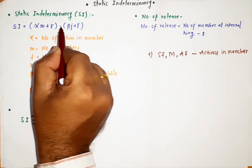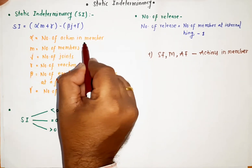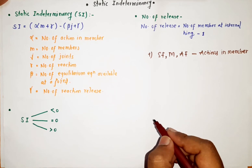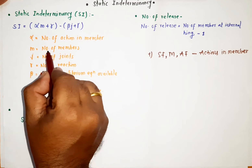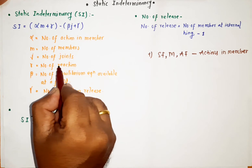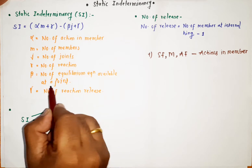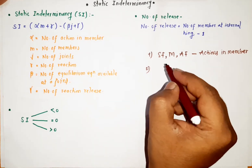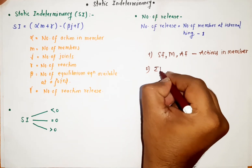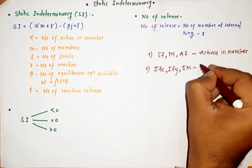The formula is: Static Indeterminacy (SI) = αm + r - βj + γ. Here, α is equal to the number of actions in a member. There are three types of actions in every member: shear force, moment, and axial force. m is the number of members, j is the number of joints, r is the number of reactions, and β is the number of equilibrium equations available at a joint — which are summation of Fx, summation of Fy, and summation of moments.